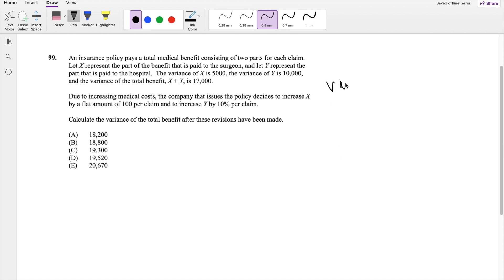So I'm just going to write out all the information we know. They say the variance of x is equal to 5,000. The variance of y is equal to 10,000. And they also say the variance of the total benefit, so variance of x plus y, is equal to 17,000.